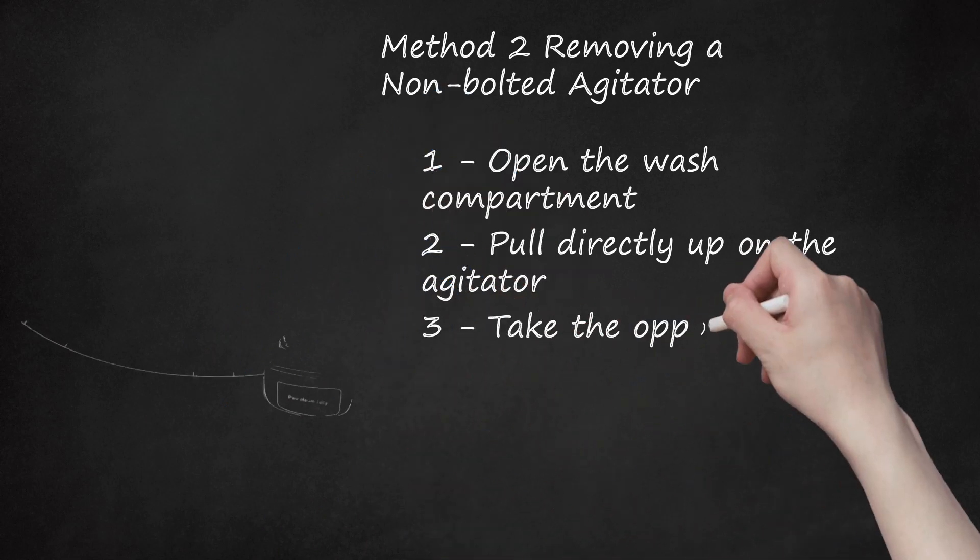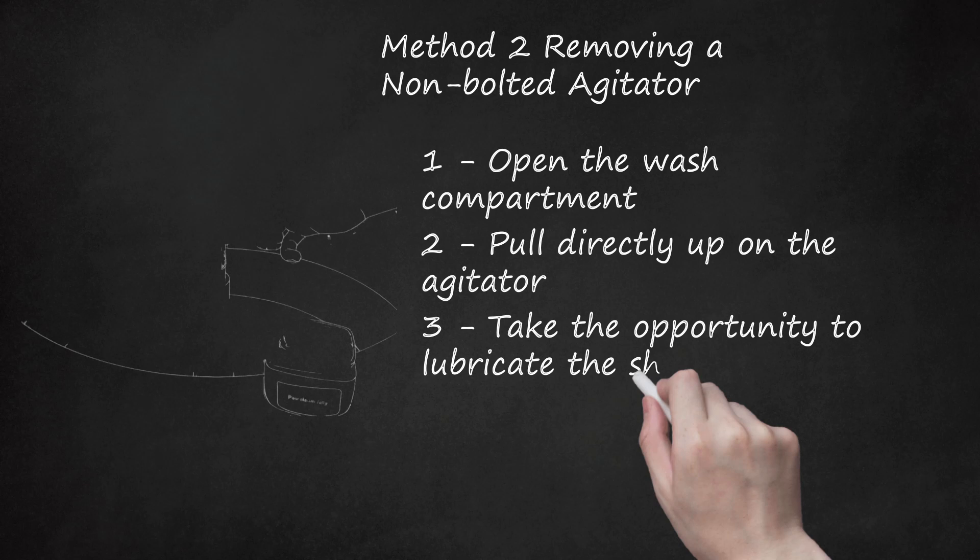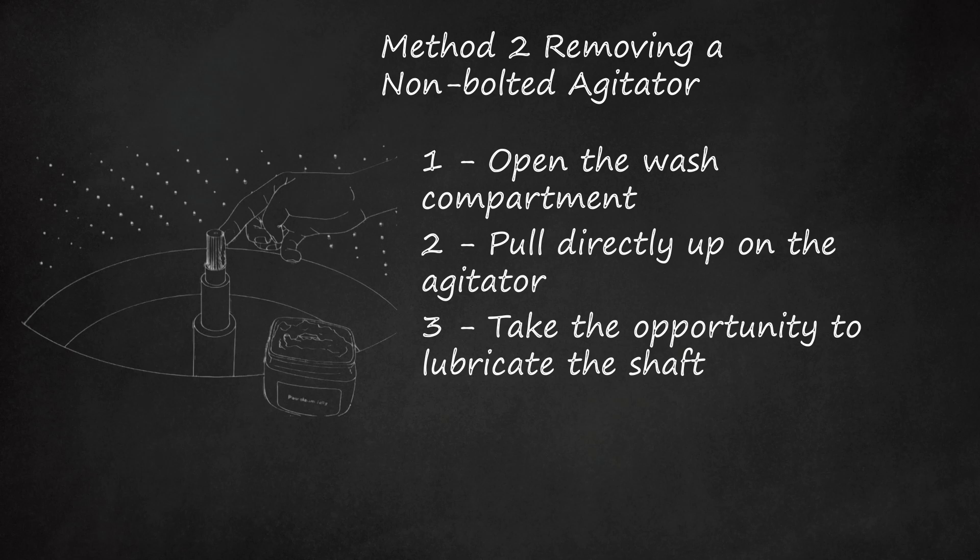Step 3: Take the Opportunity to Lubricate the Shaft. Older models of washing machines usually have a metal shaft under the agitator that requires occasional lubrication to keep the motion of the agitator smooth. As long as you have access to the shaft, ensure it stays in good working order by using a small amount of petroleum jelly, often called by the brand name Vaseline, to lubricate it.